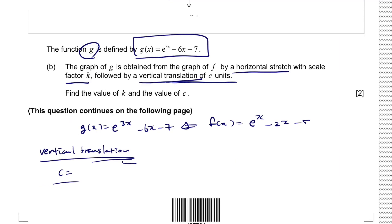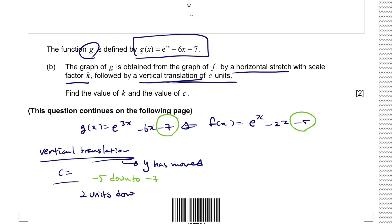Vertical translation means we have to check how the y value has moved. You can see that function G of x has negative 7 as its y-intercept, and function f of x has negative 5 as its y-intercept. So we have moved down to negative 7 from negative 5 — that is 2 units down for c, or you can say c equals negative 2.